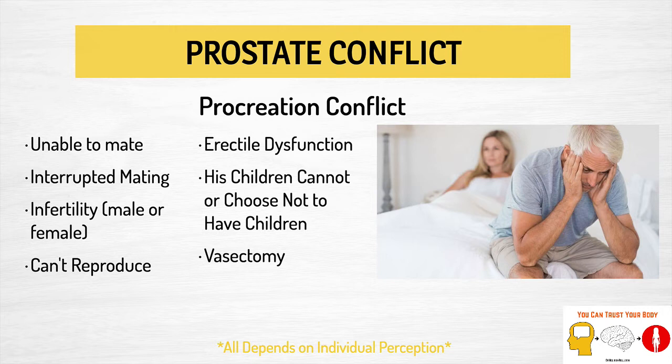The first type of conflict is a procreation conflict. Examples include: if a person is unable to mate, if there is interruption of mating, infertility on the part of the male or female, if they just can't reproduce, if they're experiencing erectile dysfunction. If a man's offspring either choose not to or cannot have children, or are suffering with infertility themselves, this can initiate a procreation conflict. Also a vasectomy — even if a man decides it's a good idea, there could be a subconscious part of him experiencing this procreation conflict.